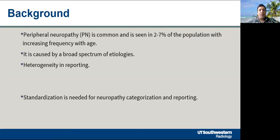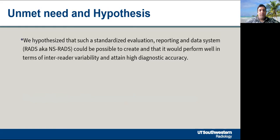Peripheral neuropathy is common and is seen in two to seven percent of the population with increasing frequency with age. It is caused by a broad spectrum of etiologies and there is heterogeneity in reporting, so standardization is needed for neuropathy categorization and reporting. We hypothesize that such a standardized evaluation reporting and data system, NSRADS, could be possible to create and that it would perform well in terms of inter-reader variability and attain high diagnostic accuracy.